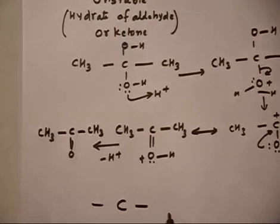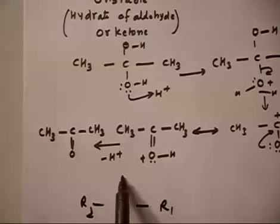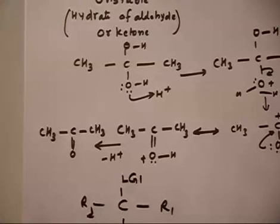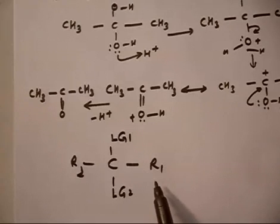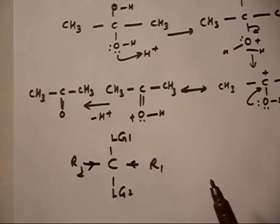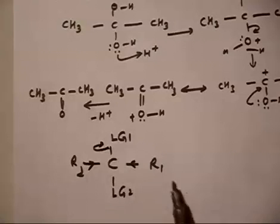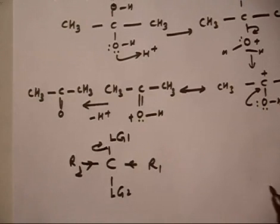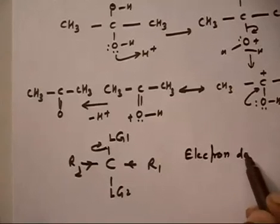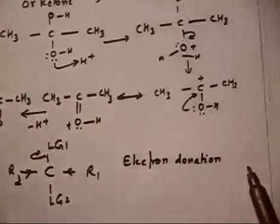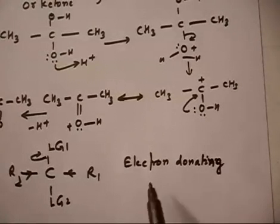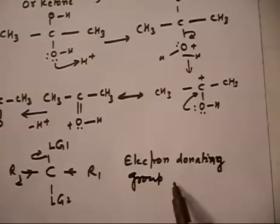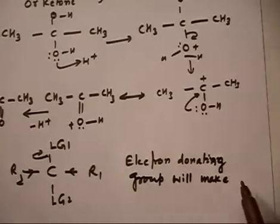In general, if you have two leaving groups (LG1 and LG2) on the same carbon, such compounds are generally unstable. If an electron-donating group is present, it will repel one leaving group easily, making the release of the leaving group faster. So an electron-donating group will make leaving group release easy.